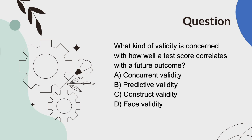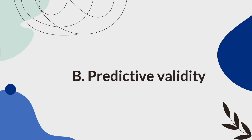What kind of validity is concerned with how well a test score correlates with a future outcome? A, concurrent validity. B, predictive validity. C, construct validity. Or D, face validity. And the answer is B, predictive validity.